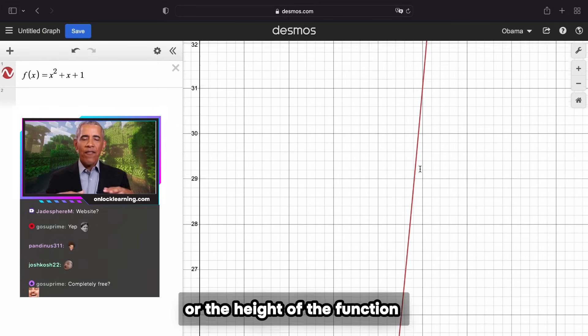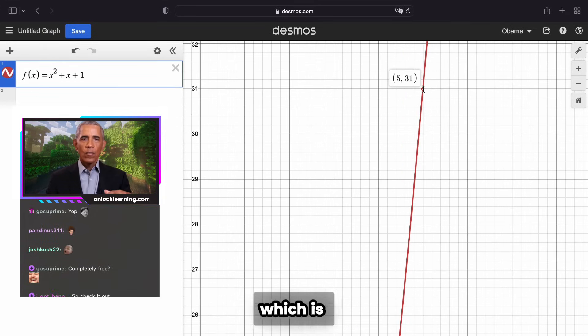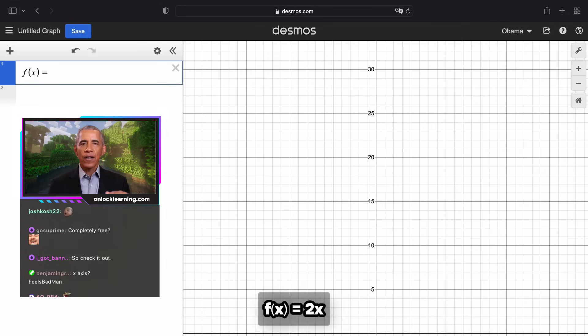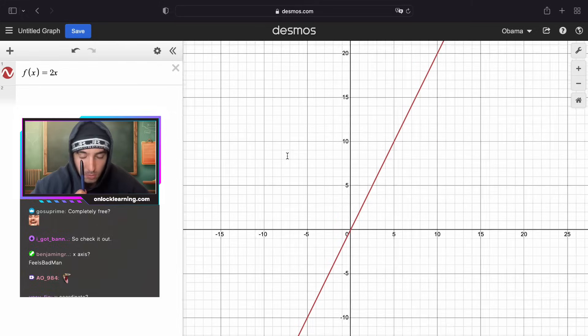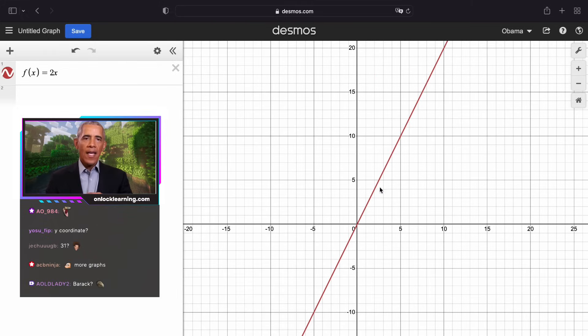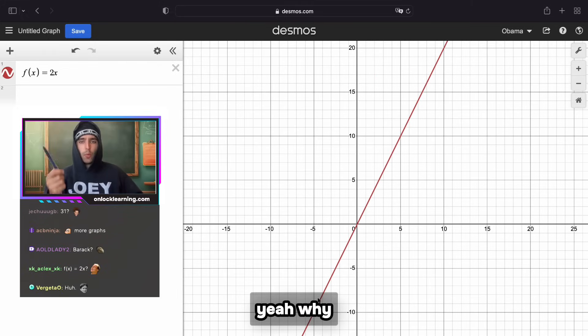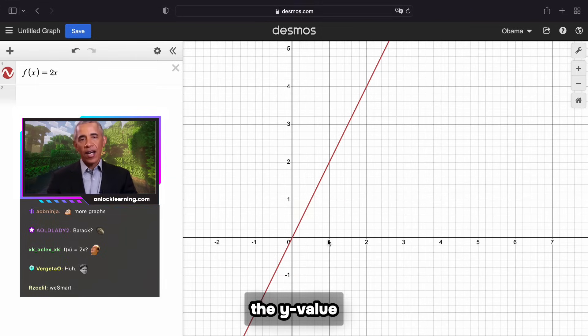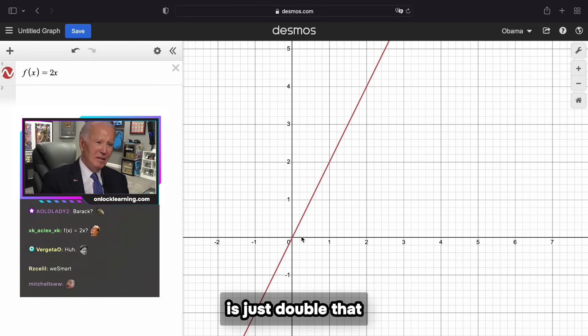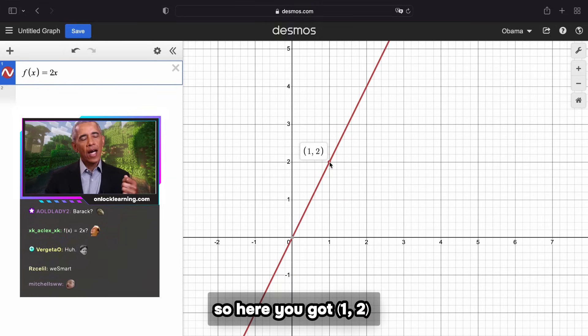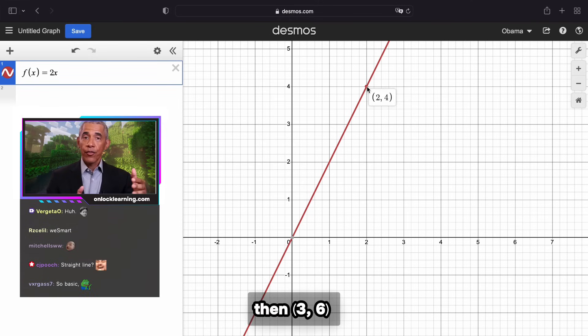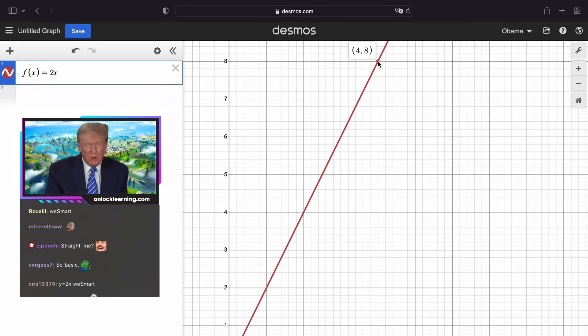Grab some other functions for us Barack. How about f(x) equals 2x? Huh. Now notice this is a straight line. Yeah, why? Why is it straight? Well whatever the input x is, the y value—basically the height—is just double that. So here you got 1, 2, the next to it you got 2, 4, then 3, 6, 4, 8. That's why it keeps going up in a straight line and at a steady rate.